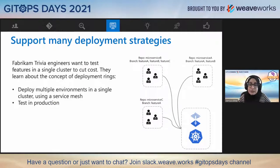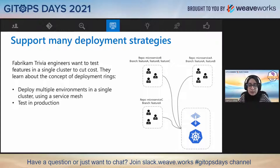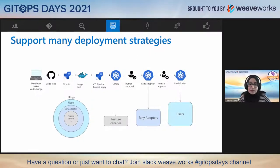Fabricamp Trivia engineers realize they'd like to test their features in a single cluster to cut costs since they're a small company. They learn about deployment rings, which allow multiple environments to exist in a single cluster with the help of a service mesh. Deployment rings allow you to group users into cohorts based on features you wish to expose — similar to A/B or canary testing, but in a more formalized manner where you roll changes from a smaller ring into a larger ring. This allows each developer to test features in the production cluster by setting a header on the ingress routes without disturbing the main production ring.